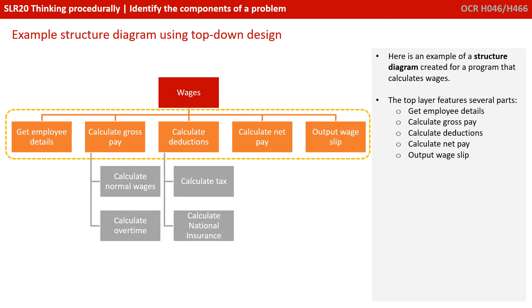Here's an example of a structure diagram created for a program that calculates wages. The top layer features several parts: a section to get the employee's details, calculate the gross pay, calculate the deductions, calculate the net pay, and finally to output a wage slip.